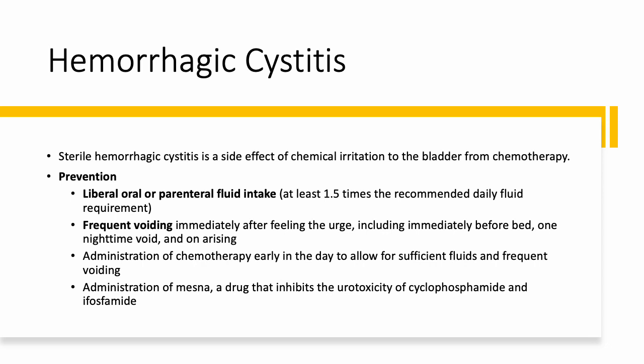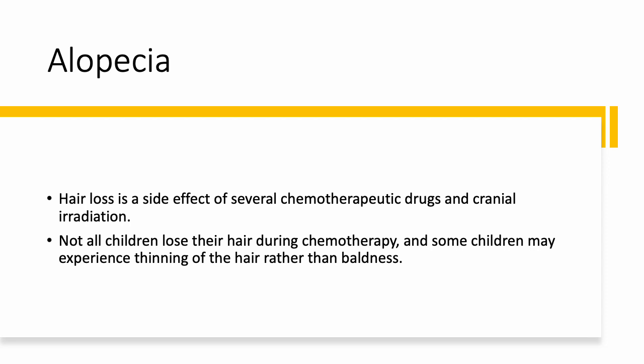Inflammation of the bladder after chemotherapy is called hemorrhagic cystitis. As you can imagine, the chemotherapy agents being eliminated in the urine cause chemical irritation to your bladder. You also don't want that chemical within the urine sitting there too long, so you're going to encourage these patients to void frequently. Alopecia is probably the most well-known side effect of several chemotherapy agents, and it can also happen because of radiation therapy.